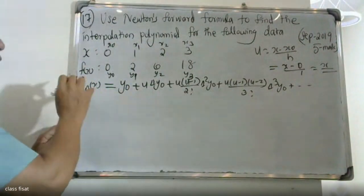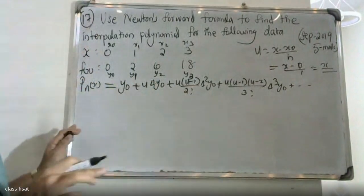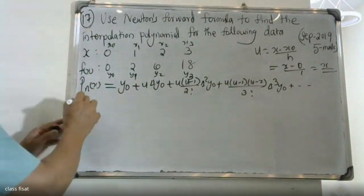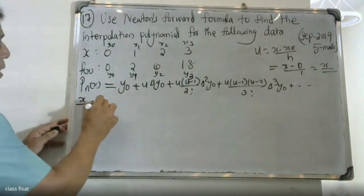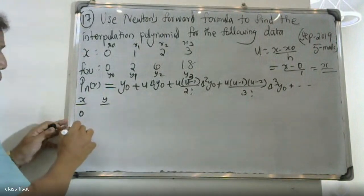Substitute in their table. They will need to know delta y, delta square value, delta cube value, then x column, this is f of x column.